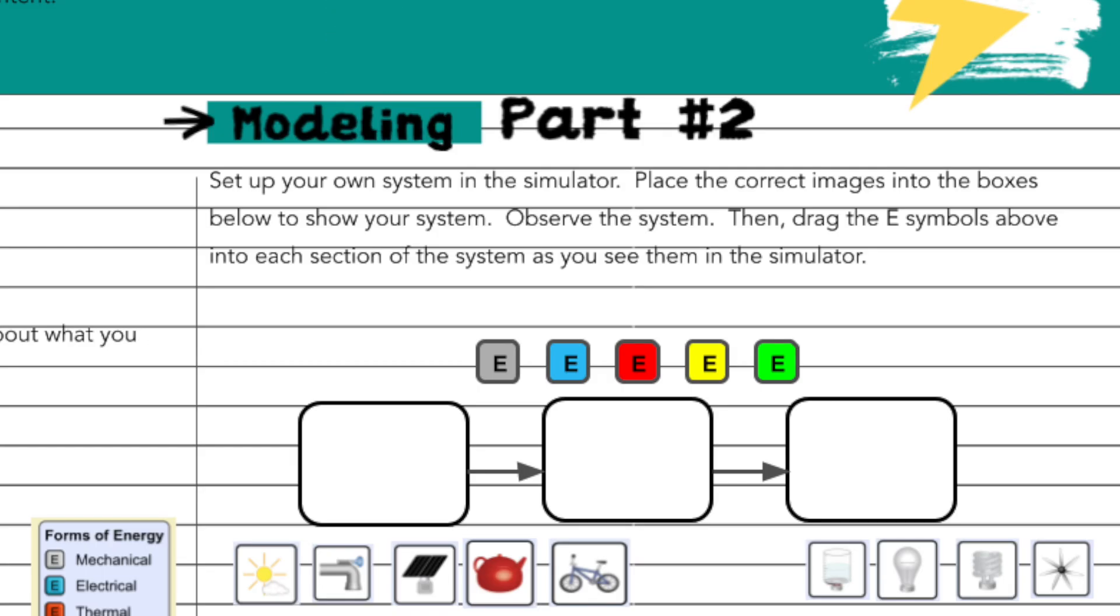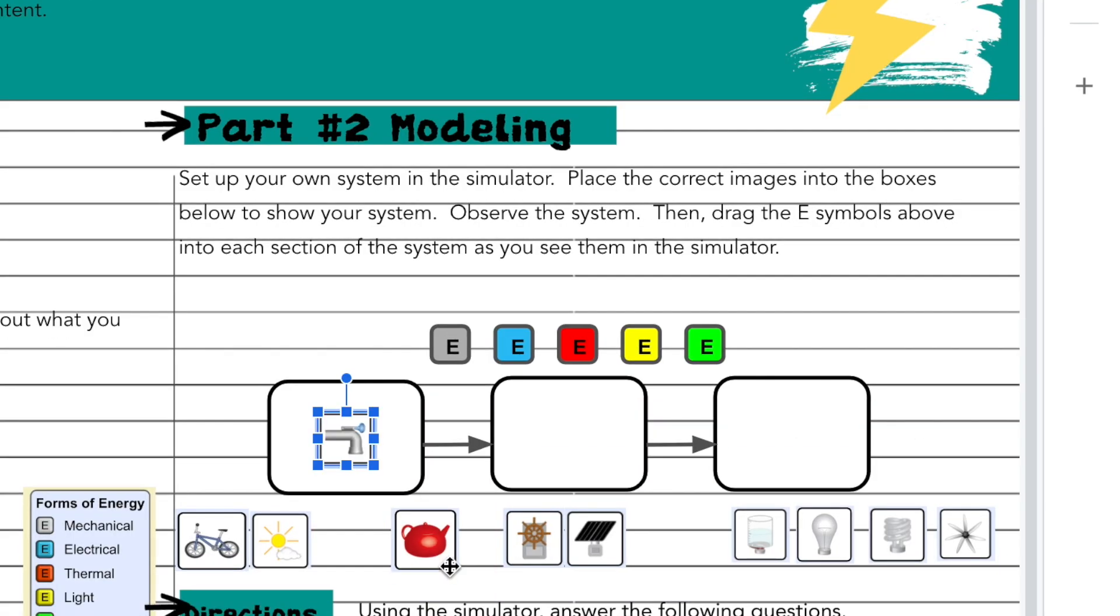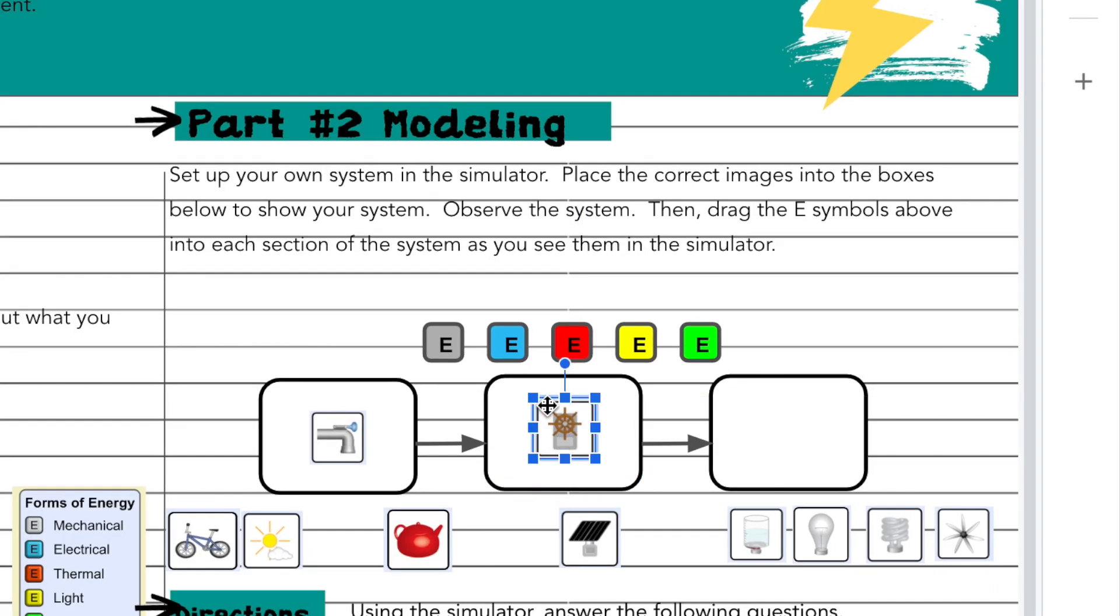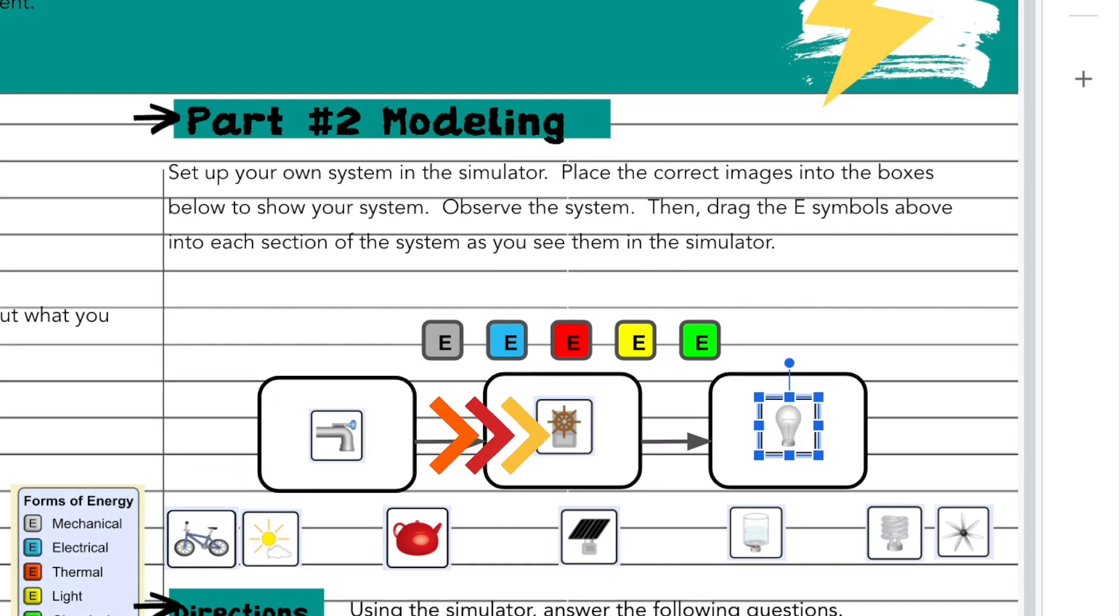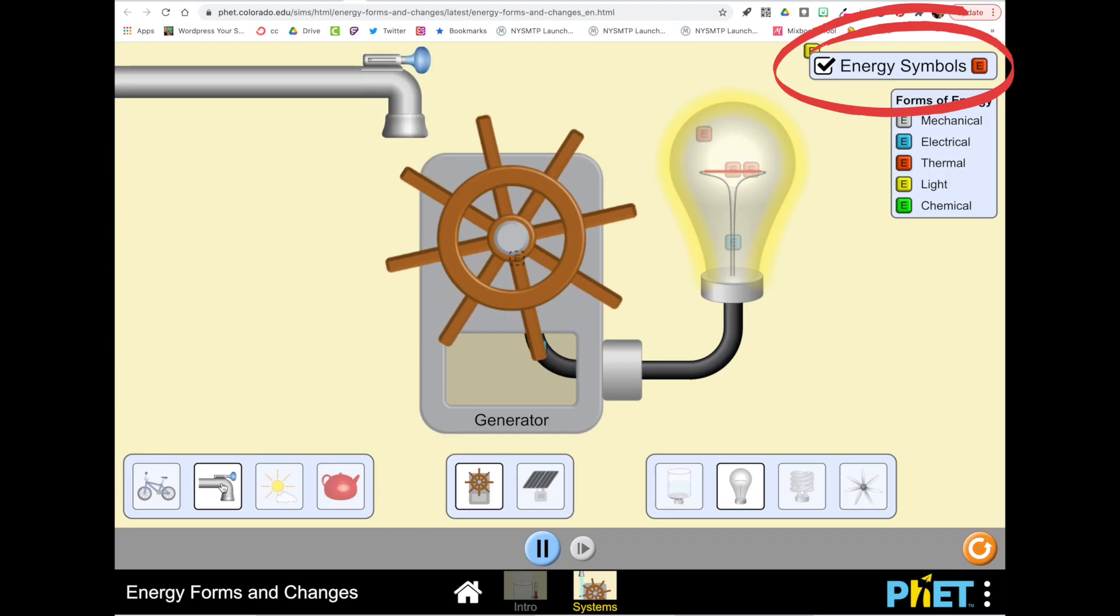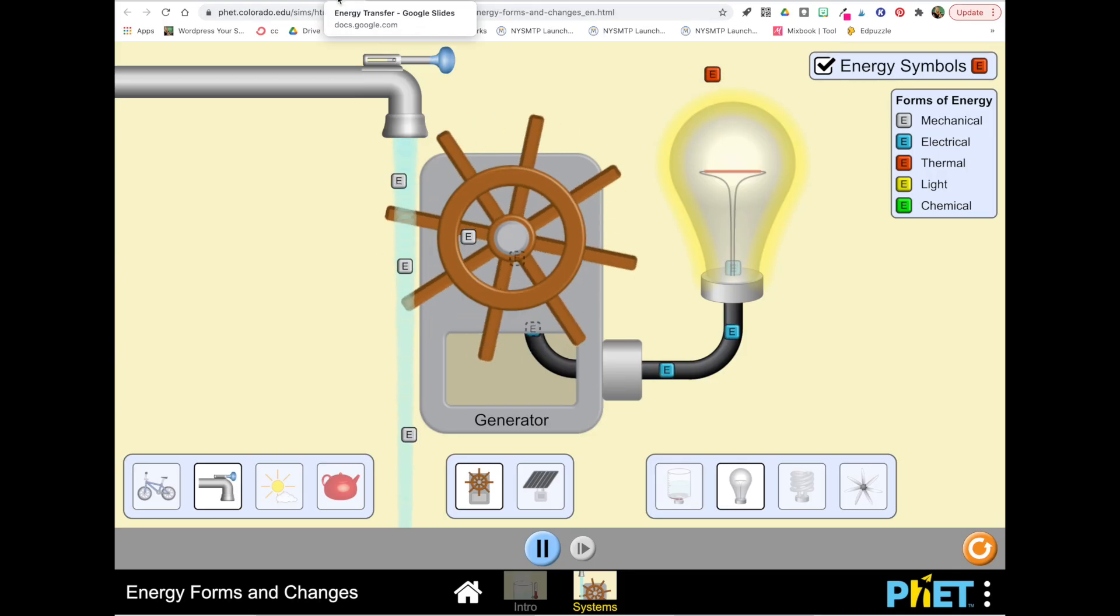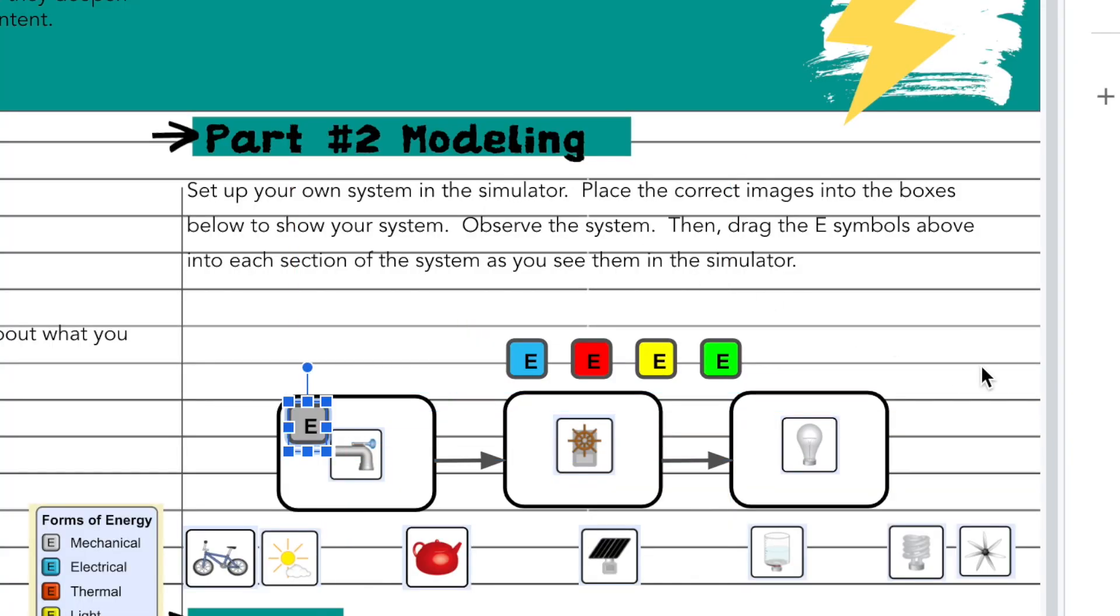For the part two section we're going to be modeling a unique system that you create. So you're going to be setting up your own system. On the bottom of the page there are icons that represent the different features of the simulator. You can see in my case I've selected the faucet, the generator, and the incandescent light bulb. After I've picked which components of the simulator I want to model, I go ahead and click on the simulator. Make sure you've selected systems and that the energy symbol is checkmarked. As you look at this simulator with your customized setup, observe the movement of the energy throughout this system. Then go back to your notebook page and model where the energy is in each part of this system. You can drag and drop these E symbols into the spaces to represent the energy movement.